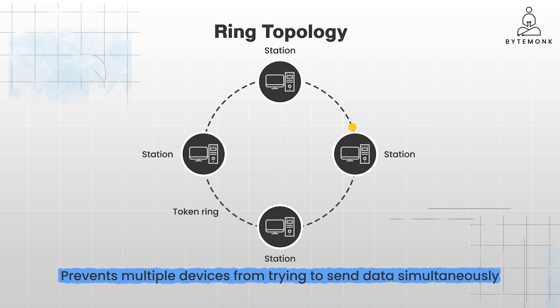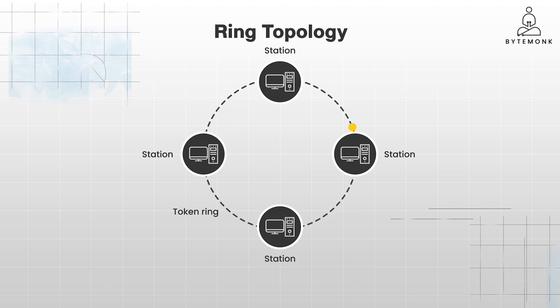All devices in a ring topology must be active for the network to function properly. If one device fails, it can break the ring and disrupt communication. Also, adding and removing devices can be tricky. The ring network was popular back in the 90s but today it's not used because of its fragility and low network speed of 4 to 16 Mbps.